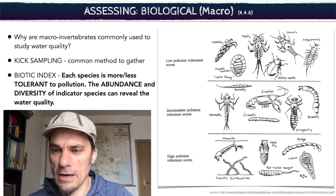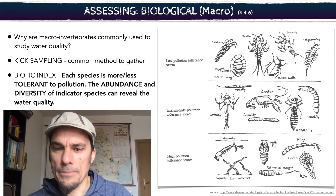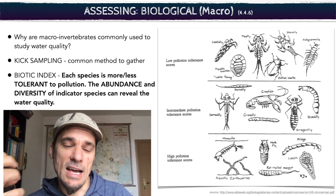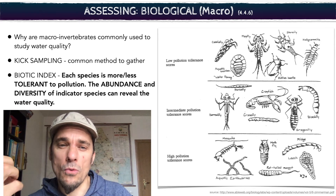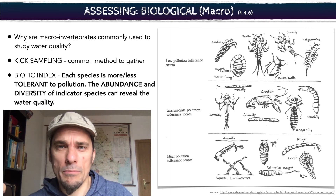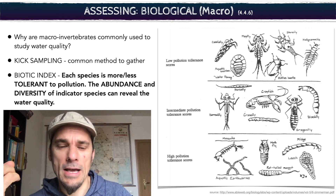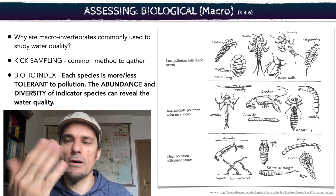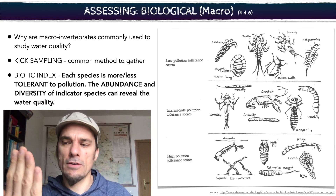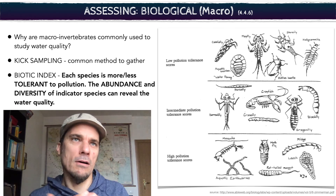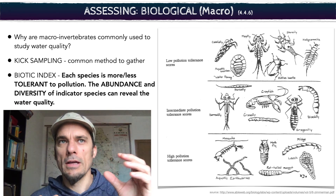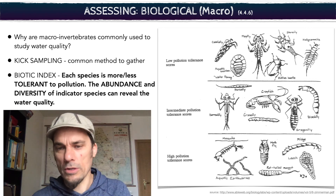If you see a lot of leeches on the bottom, or midges or mosquitoes, that's an indication that it's stagnant water and it's quite polluted. Biological tests are really, really handy because you can do them very quickly and you don't need fancy equipment at all. You just need a card to tell you which invertebrates are considered indicators of healthy water and which are found in polluted water.